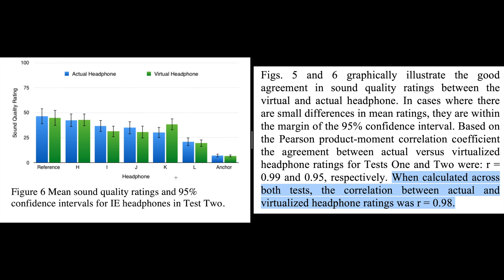Figures 5 and 6 graphically illustrate the good agreement in sound quality ratings between the virtual and actual headphone. In cases where there are small differences in mean ratings, they are within the margin of the 95% confidence interval, based on the Pearson product-moment correlation coefficient. The agreement between actual versus virtualized headphone ratings for tests 1 and 2 was R=0.99 and R=0.95 respectively, and when calculated across both tests, the correlation was R=0.98.